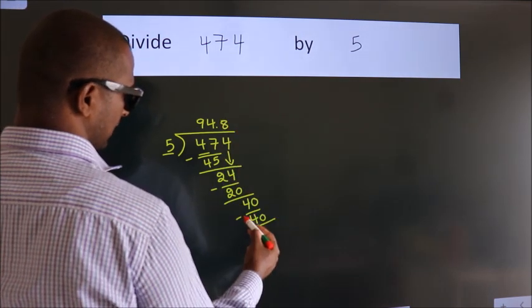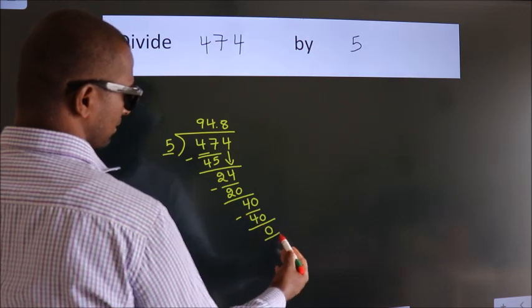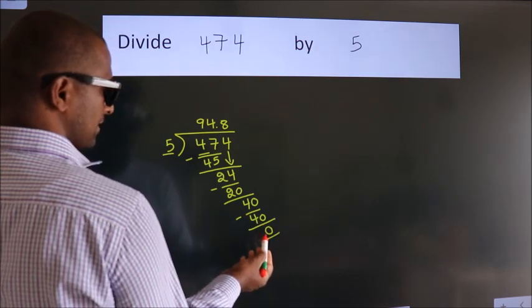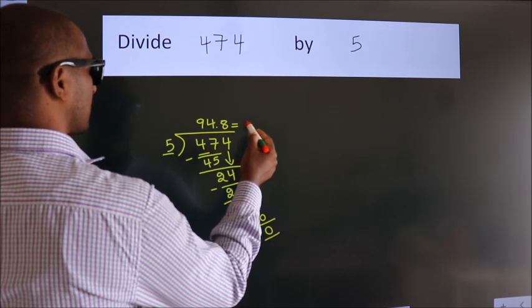Now, we subtract. We get 0. We got remainder 0. So this is our quotient.